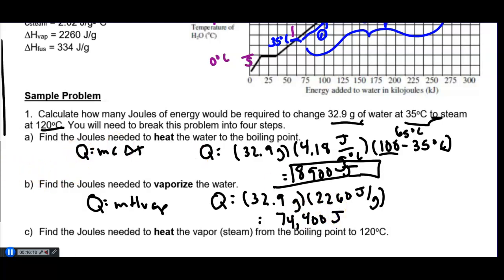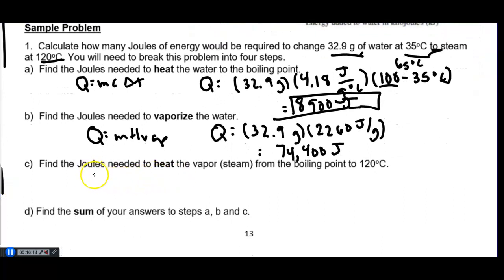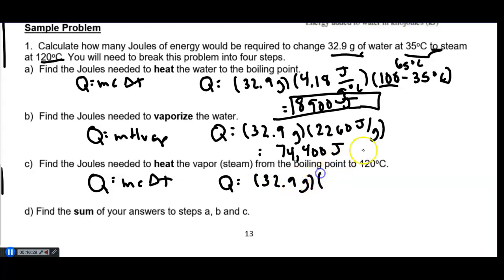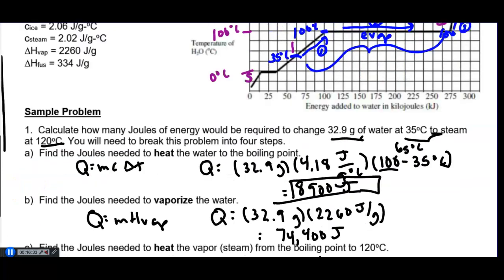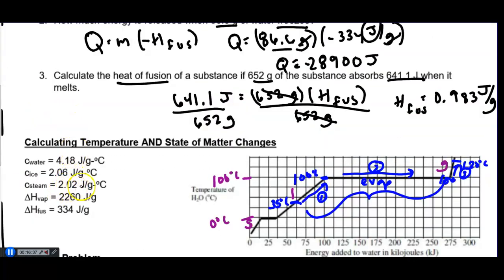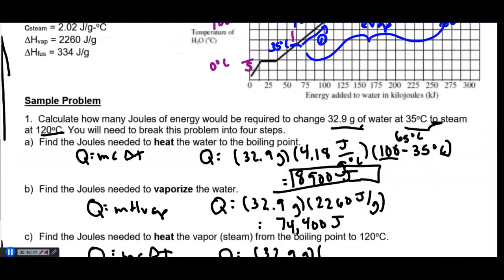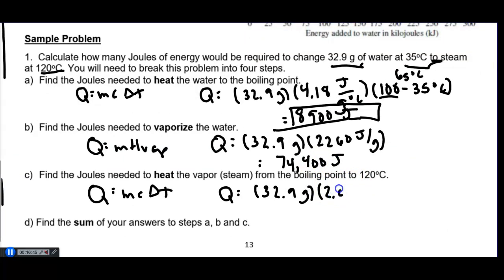Step 3: the steam continues to heat from 100°C to 120°C. There's a temperature change, so use Q = mcΔT. Q = 32.9 g × 2.02 J/(g·°C) × (120 − 100)°C. The temperature change is 20°C, which has only one sig fig. Multiplying and rounding to one sig fig: Q₃ = 1,000 joules.